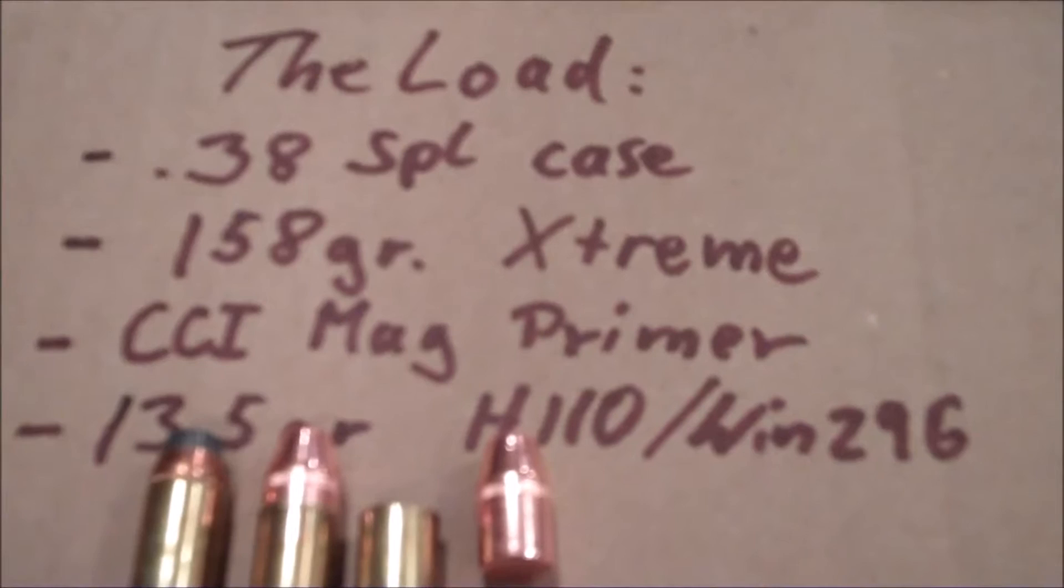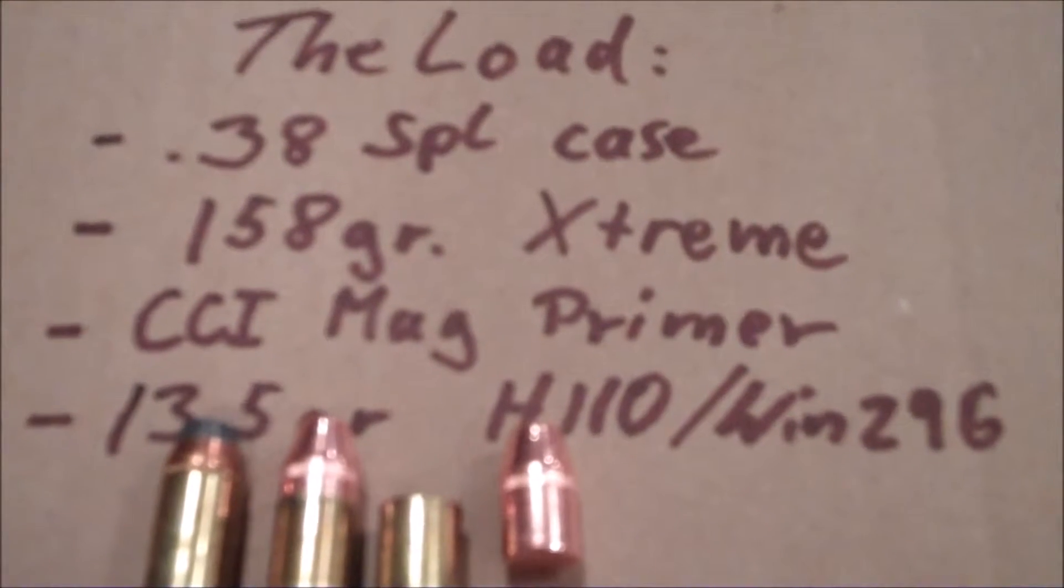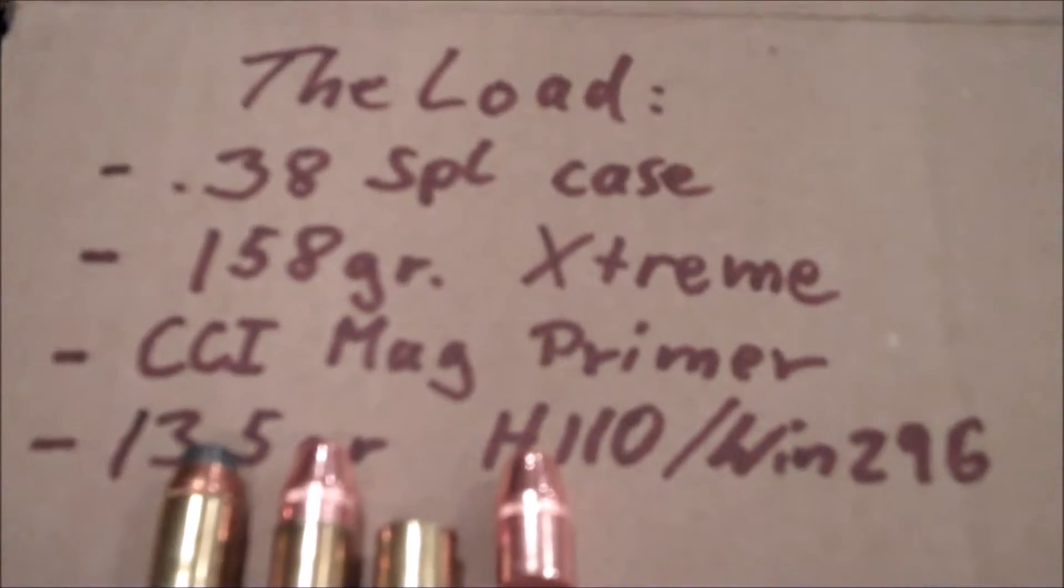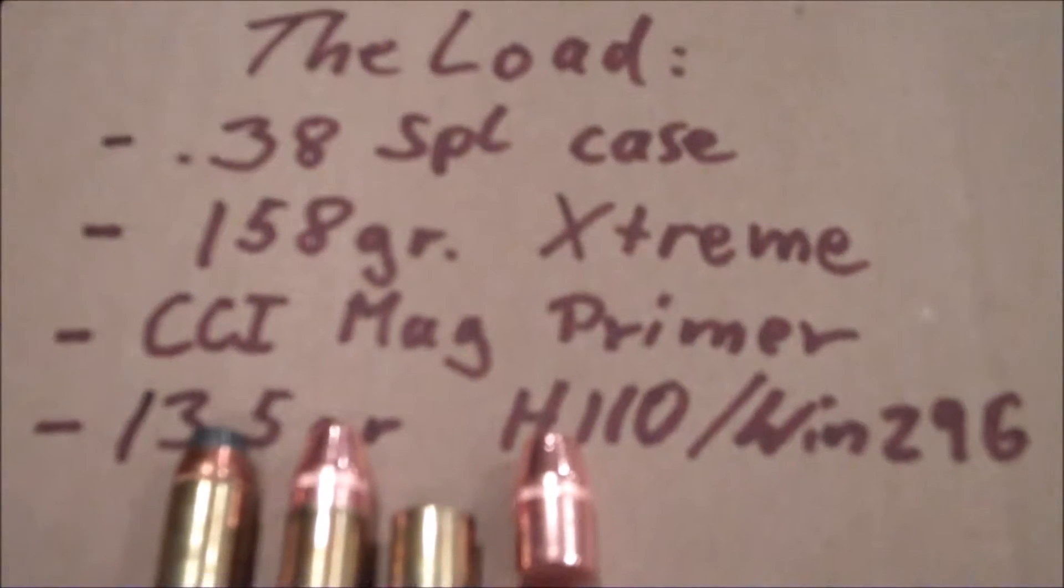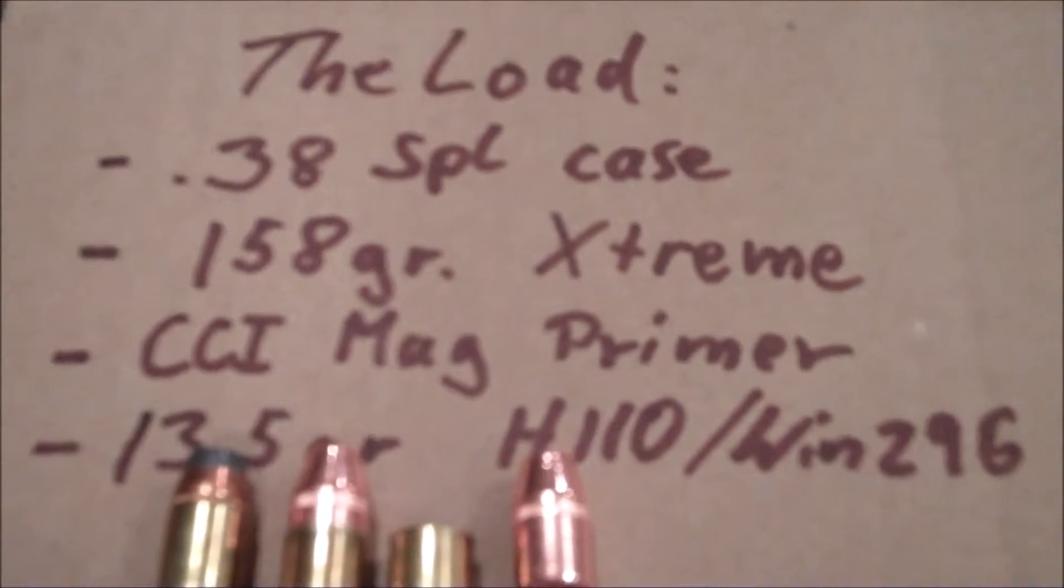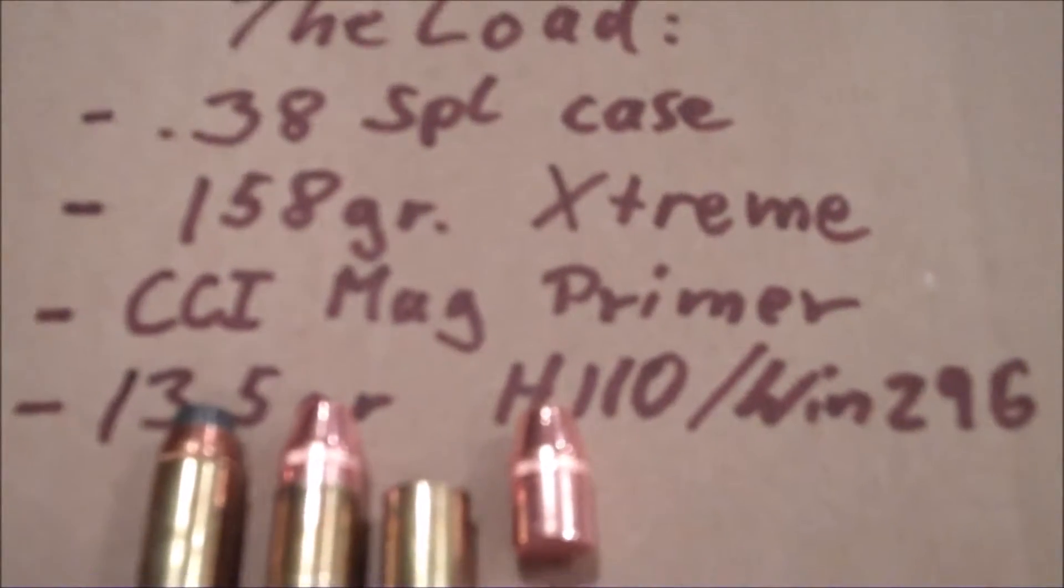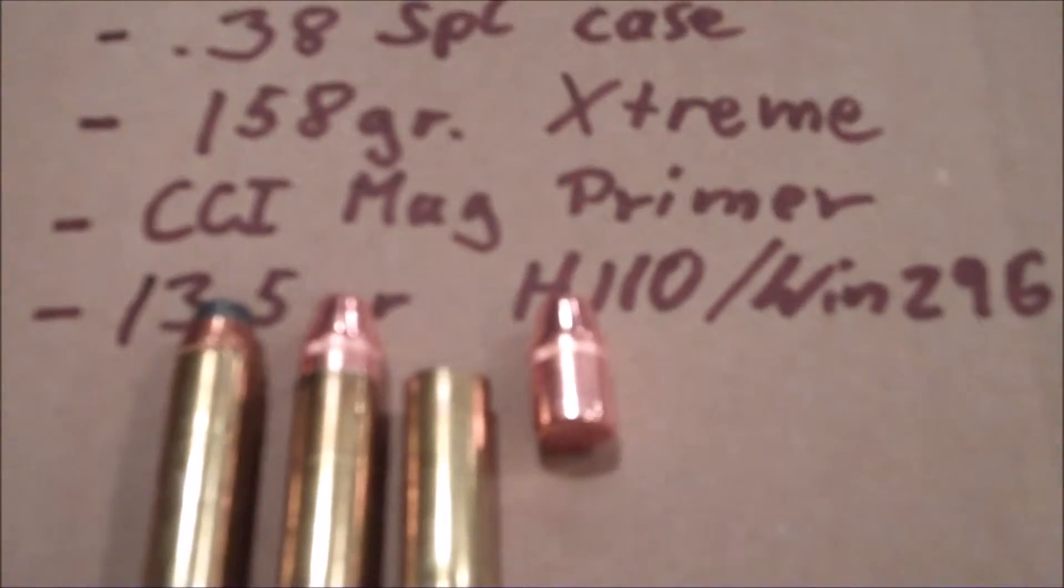So this produced just under 1200 feet per second of velocity out of my Coonan, which the guys at Great Lakes recommended that I don't exceed 1200 feet per second on the Extreme Bullets. So something to do with the plating.